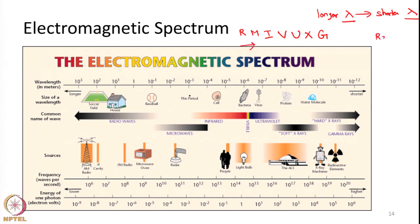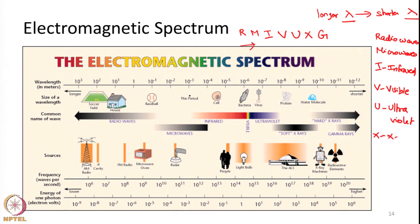So what are these? R is radio waves, M is microwaves, I is infrared, V is visible light, U is ultraviolet, X is X-rays, and G is gamma rays. This is the classification of the electromagnetic spectrum. In this particular figure, you can see radio waves at one end of the spectrum and gamma rays at the other end.